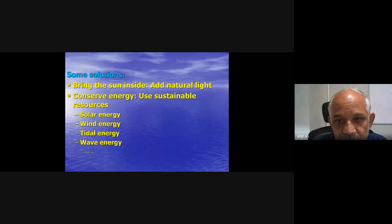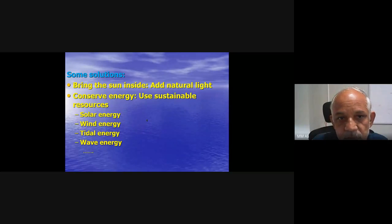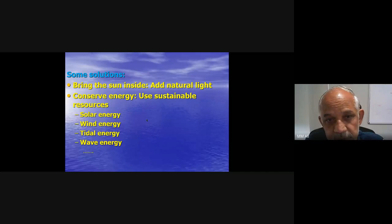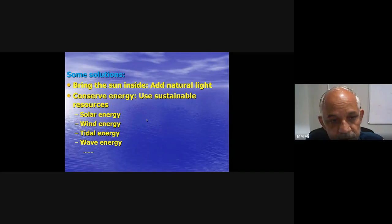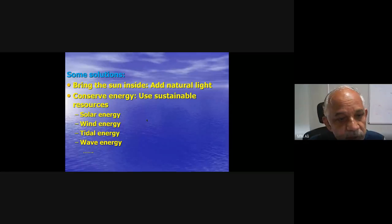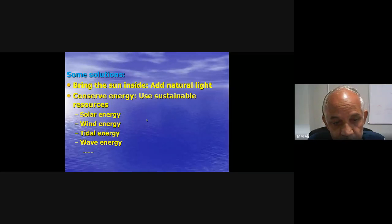What can we do to reduce global warming? Use green building concepts — bring natural light inside and conserve energy. Use sustainable energy resources instead of petrol and chemicals: solar energy, wind energy, tidal energy, wave energy, and ocean thermal energy conversion. We should try to use sustainable resources and minimize our carbon footprint. Thank you — any questions, I'll be able to answer.